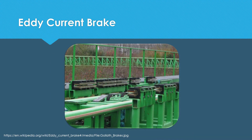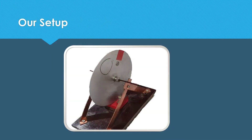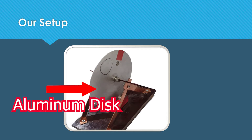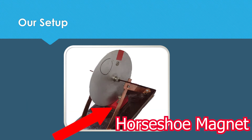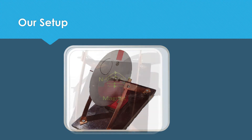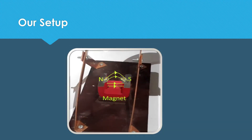Also, for roller coasters, eddy current braking is used. Now we want to do the eddy current brake experiment. Our setup consists of an aluminum disc, two holders, and a horseshoe magnet. This figure also shows the magnetic field streamlines.